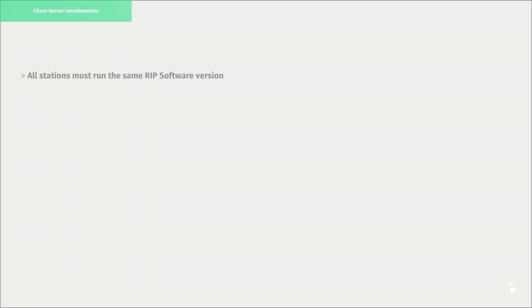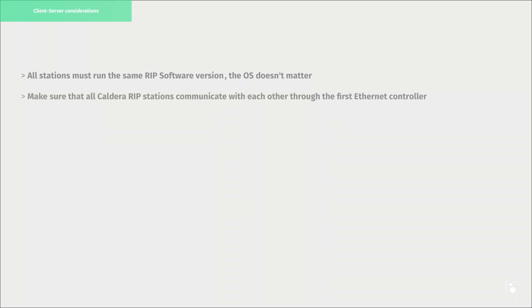All stations must run the same RIP software version. The operating system doesn't matter — it can be macOS or Debian. Make sure that all Caldera stations communicate with each other through the first Ethernet controller. Incorrect configuration could lead to connection failures and difficulties in initialising the printer's modules. To test the connection between RIP stations or printers, you can enter ping plus the remote IP address in a terminal.